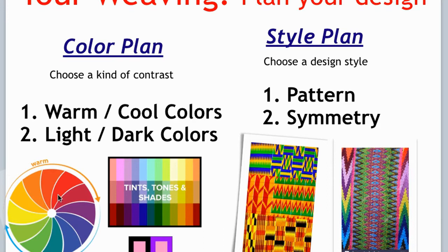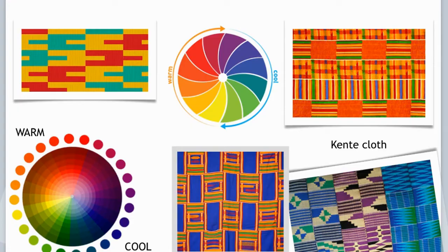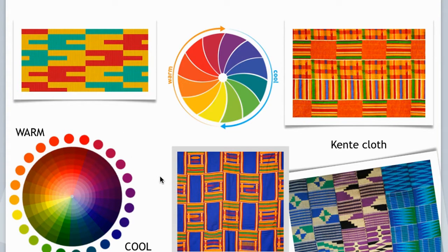I would really recommend you try a combination between warm and cool colors, or between light and dark colors. For a quick review: warm colors are red, orange, and yellow, and cool colors are usually green, blue, purple, turquoise, things like that. If you combine, for example, warm red and yellow with a green — a cool color — or yellow with blue, those are really nice combinations, a warm with a cool. Or you could have a light with a dark.